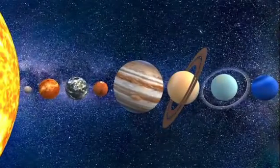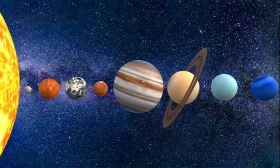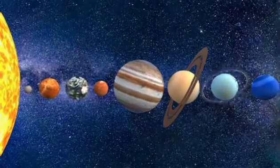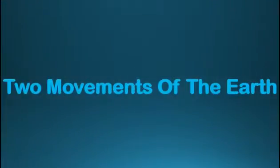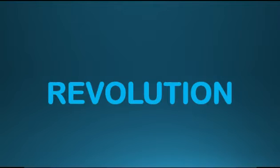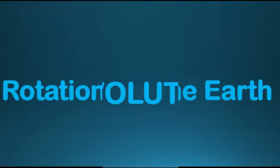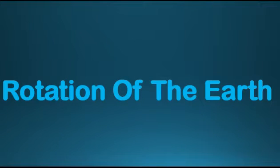Like Earth, each planet of the solar system moves around the sun. The two main movements of the earth are rotation and revolution. In this video, I will tell you about rotation.